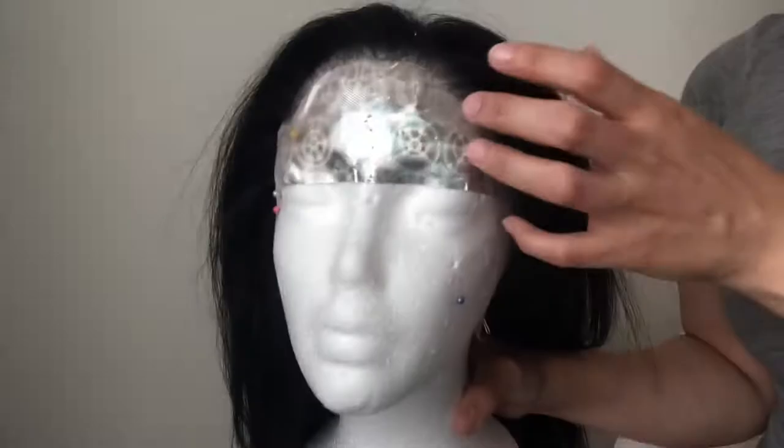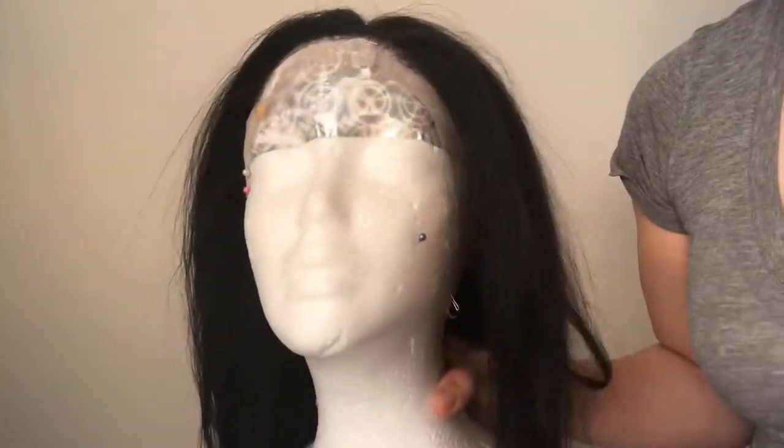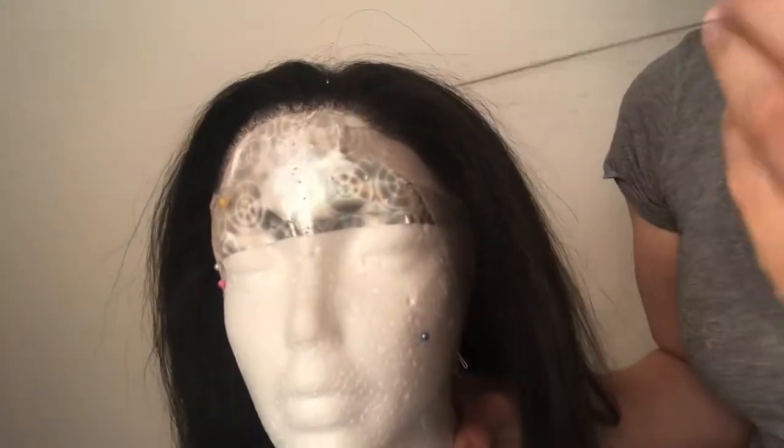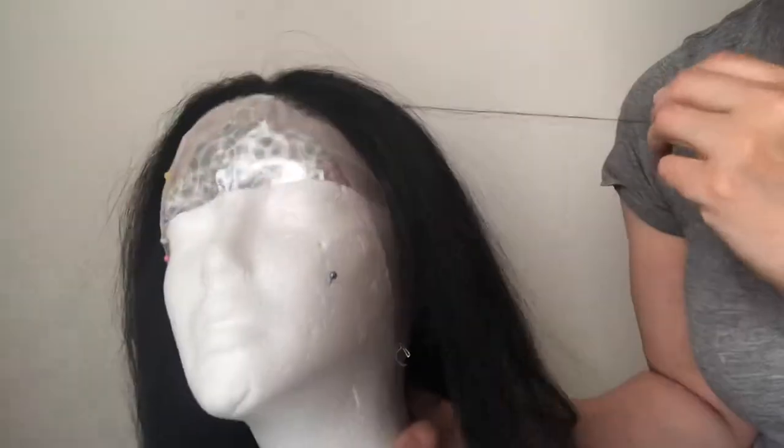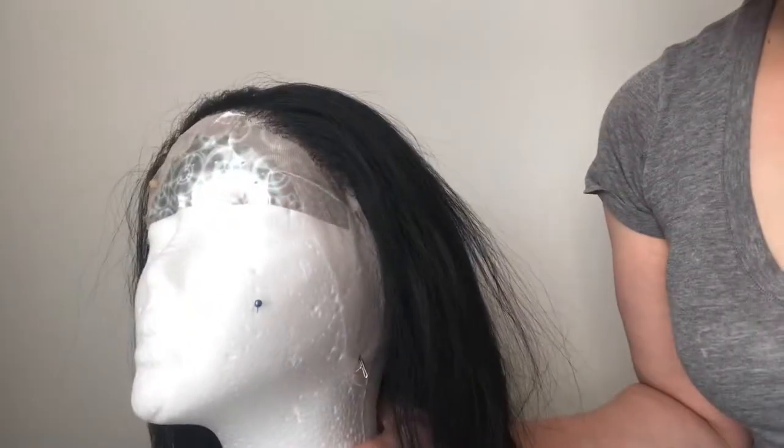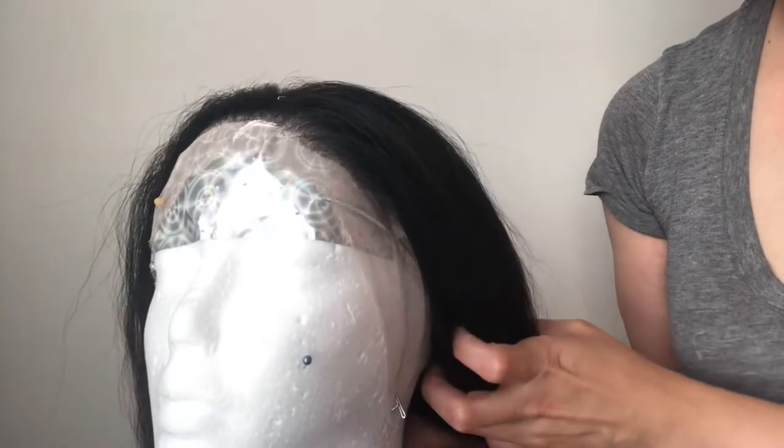Hey guys, so today I'm going to be talking about ventilating hair. Ventilating hair is basically applying hair strand by strand to a lace to make a lace front wig, to make a lace closure, a frontal, whatever it is that you want to do.